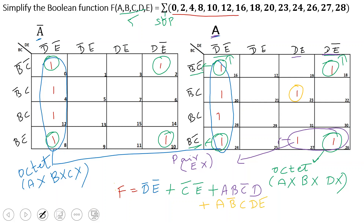This is the final answer for the given problem: f equals D-bar E-bar plus C-bar E-bar plus A B C-bar D plus A B-bar C D E.